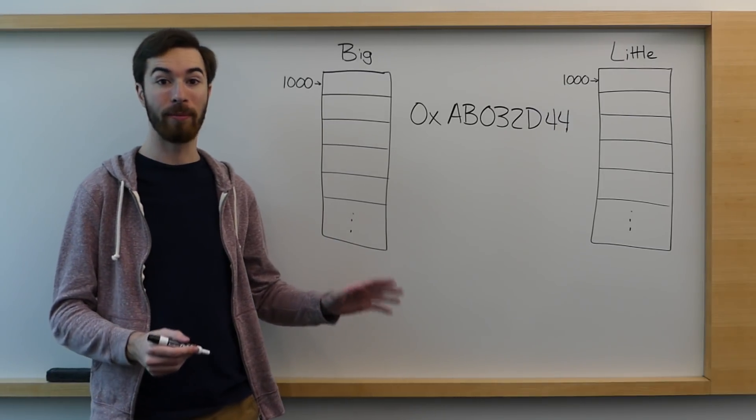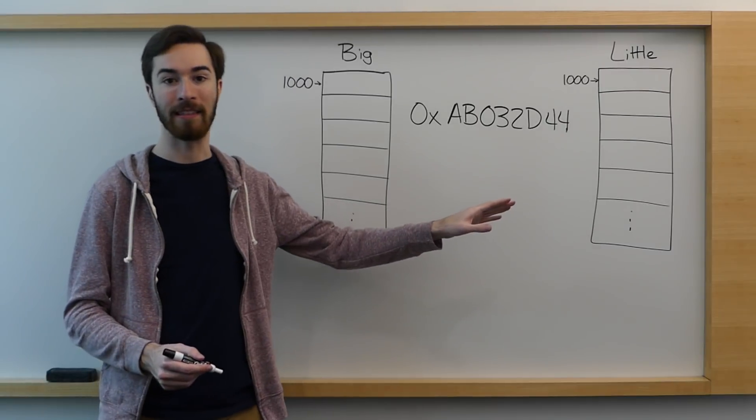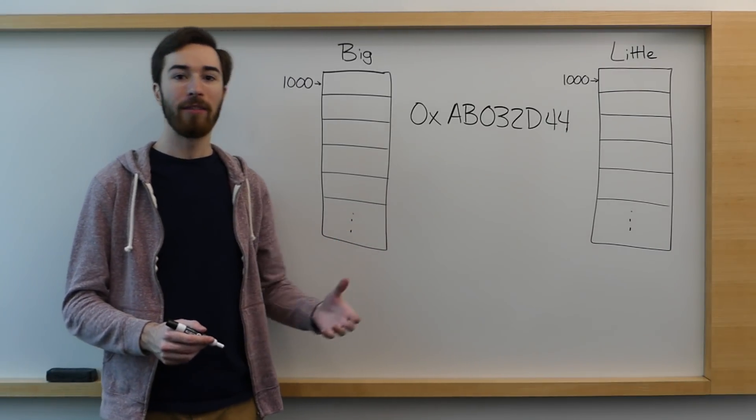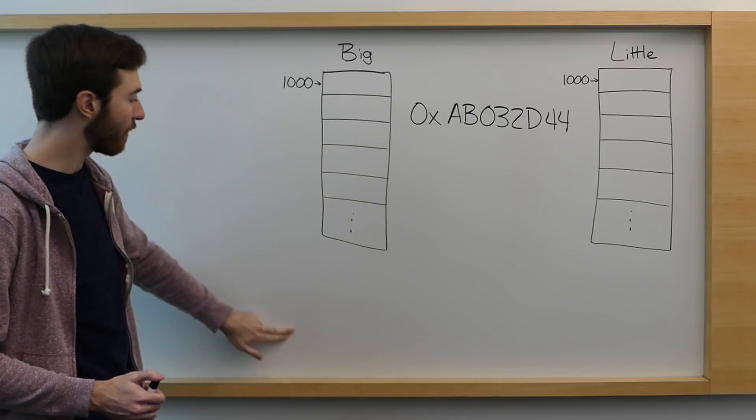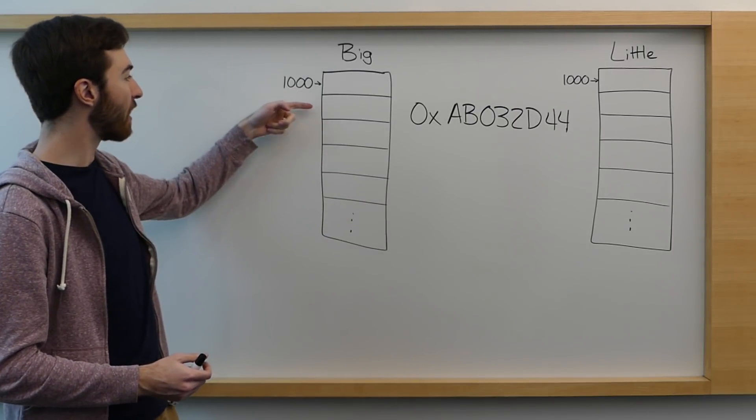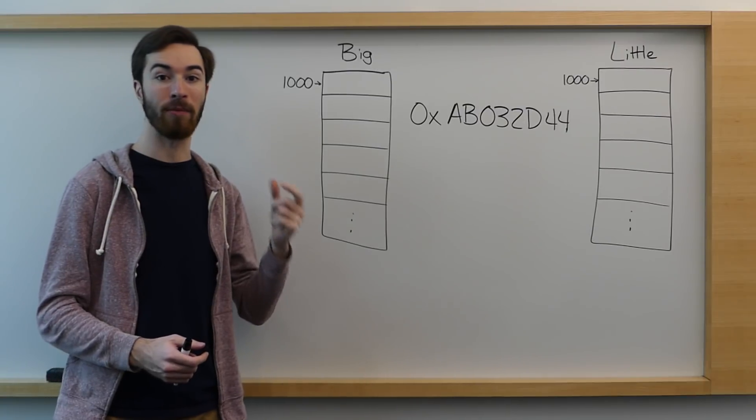To start off with, we definitely need to talk about big endian and little endian systems. You need to remember that ARM is byte addressable, meaning that if you have a bunch of memory in ARM, each address of memory only corresponds to a single byte.